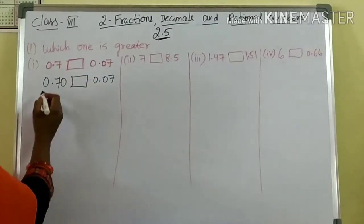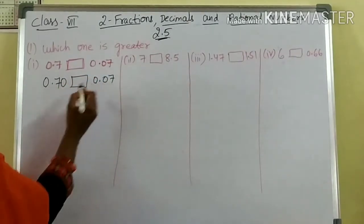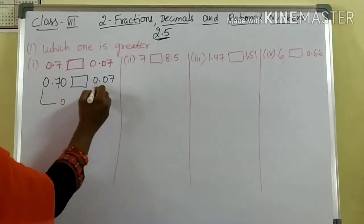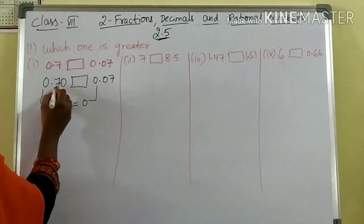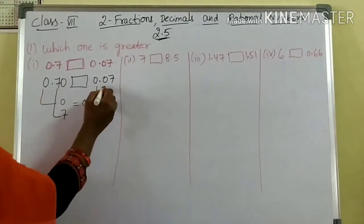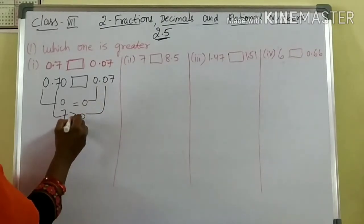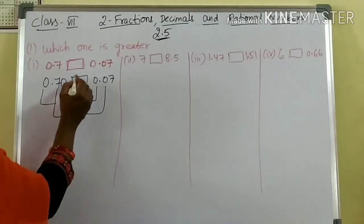Now compare the whole part first. What is the whole part here? 0 and 0 — they are equal. Next, compare after decimal: the 10th place. Here is 7, here is 0. Which is greater? 7 is greater. Then I can say 0.7 is greater.